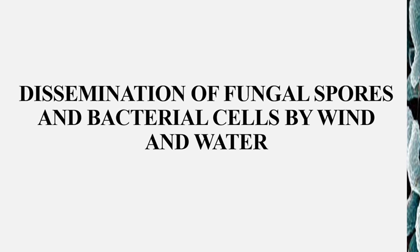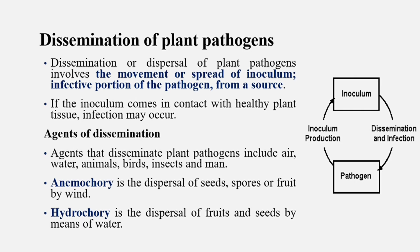The next topic is the dissemination of fungal spores and bacterial cells by wind and water. Dissemination or dispersal of plant pathogens involves the movement or spread of inoculum — the infective portion of the pathogen — from the source. The agents of dissemination are air, water, animals, birds, insects, and man.